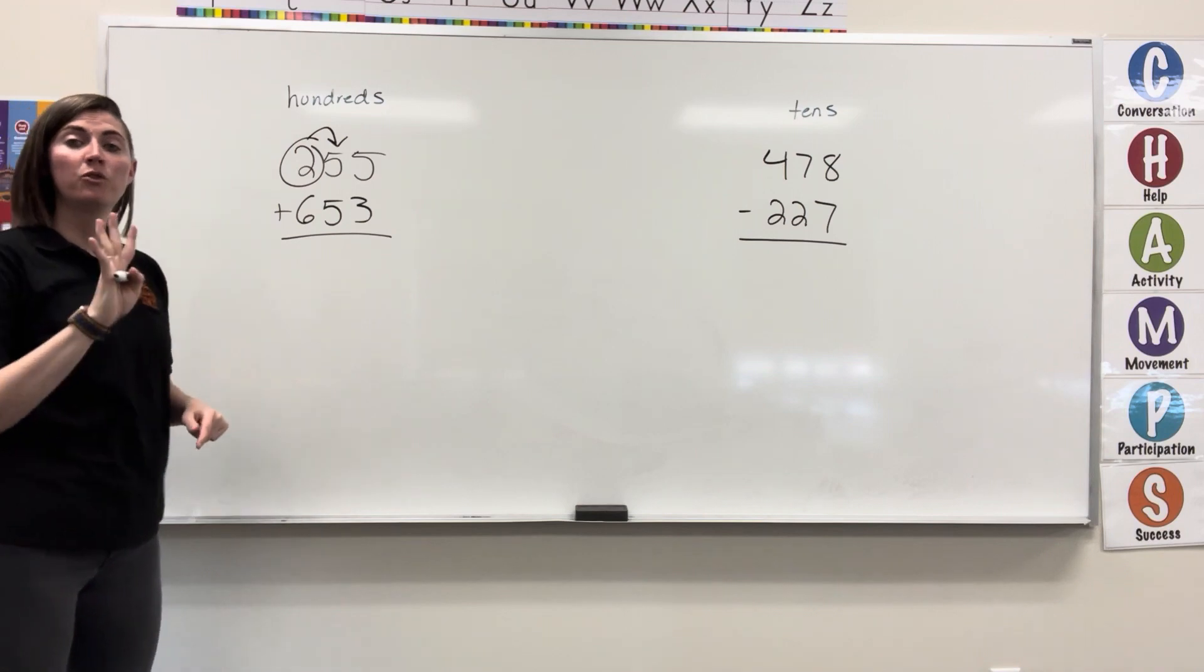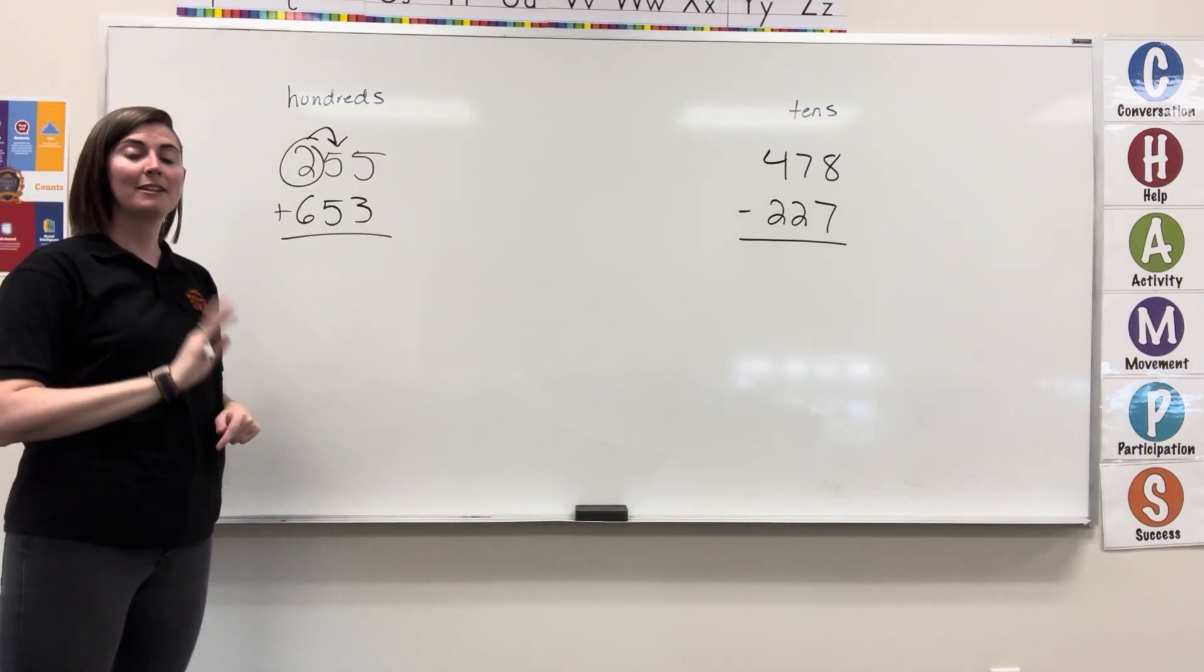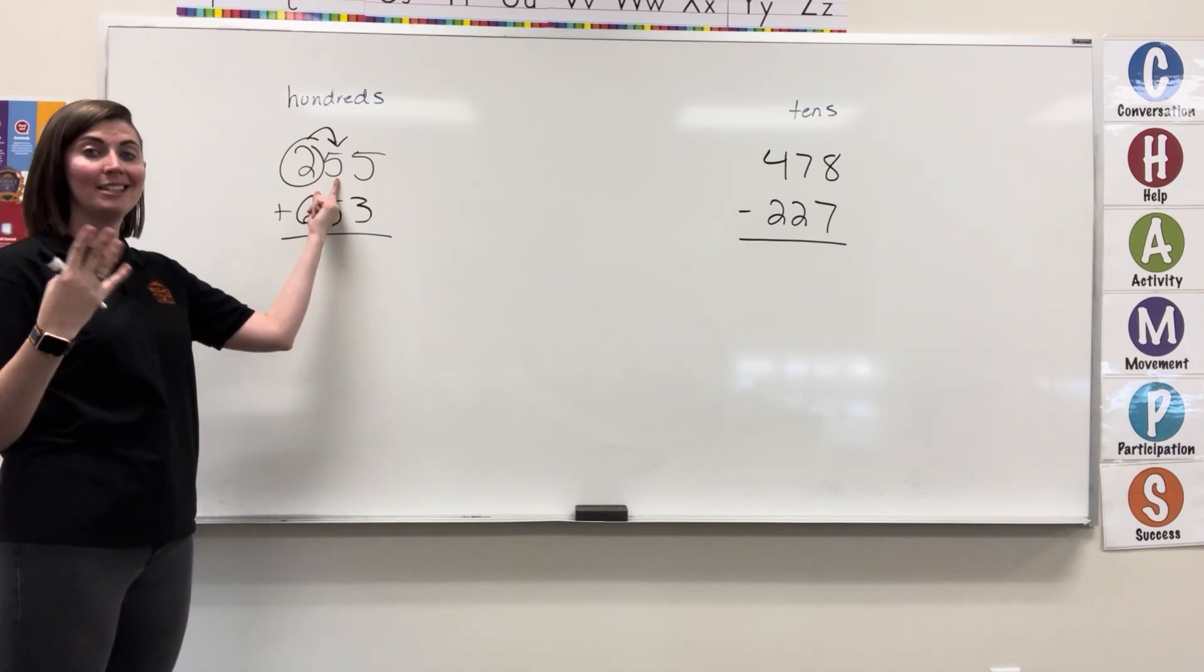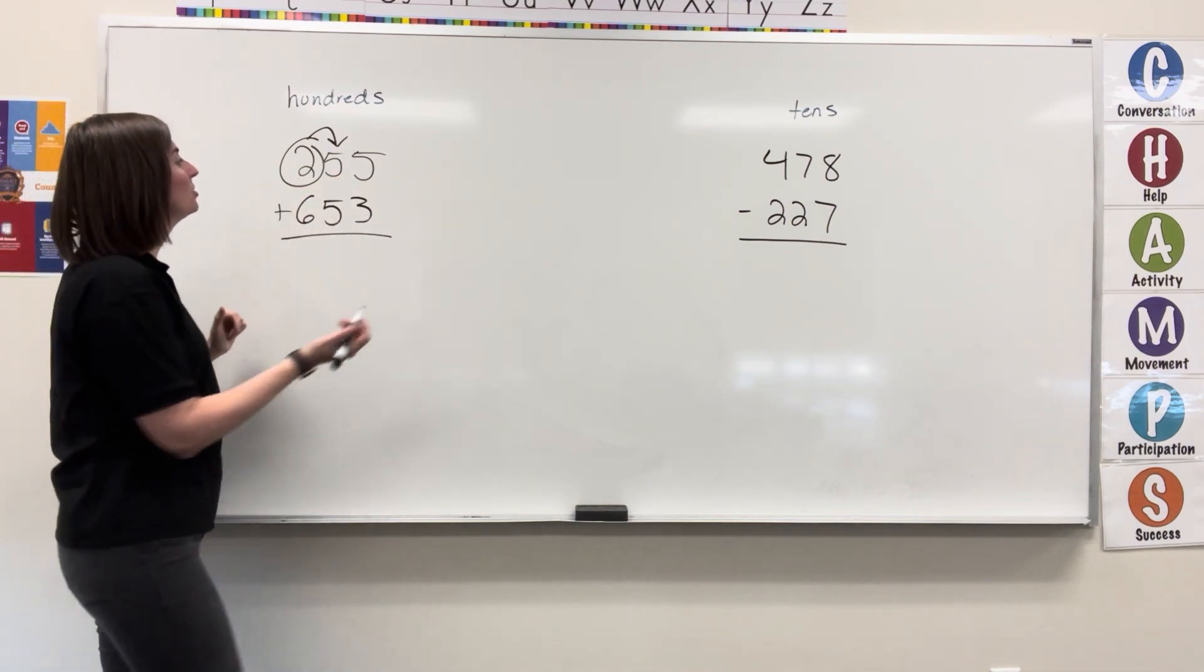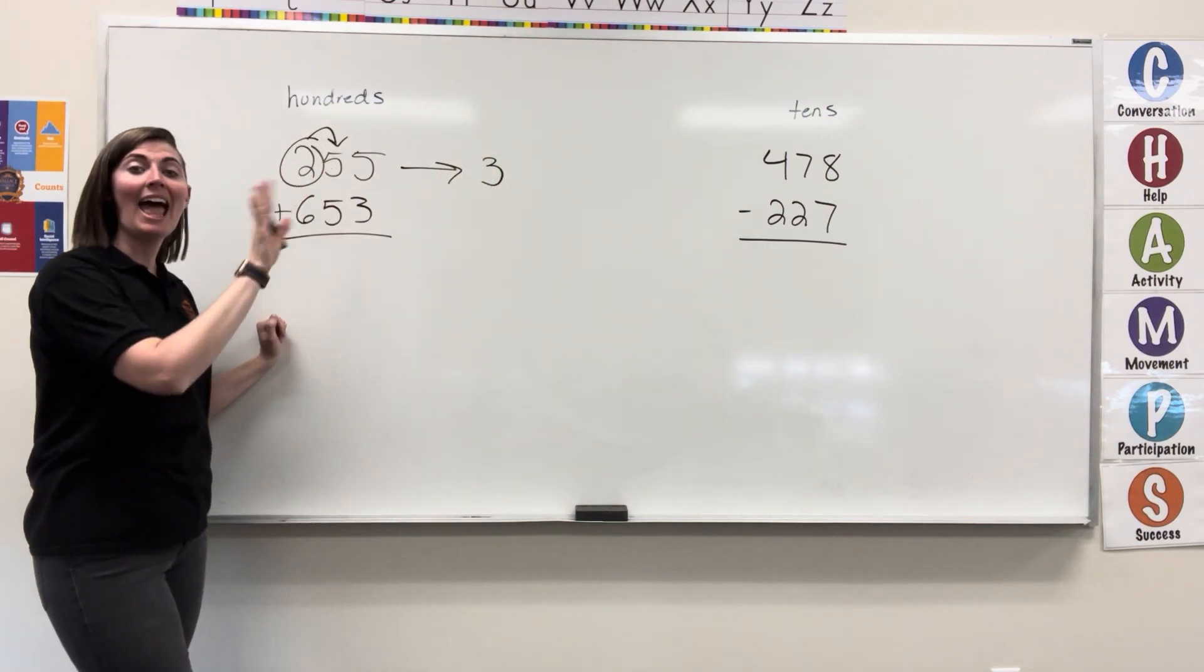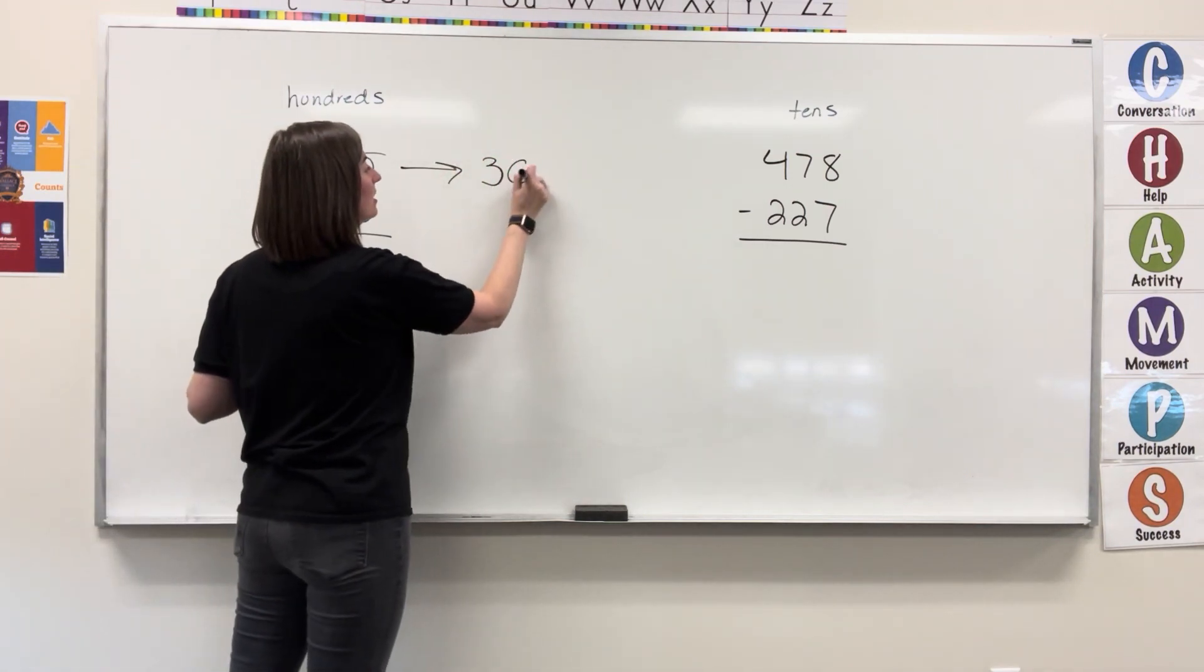Look to the right. Four or less, let it rest. Five or more, let it soar. When we're looking at the five, it says five or more. We're going to let this two soar. So, two becomes a three. Everything to the right is a zero.